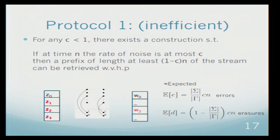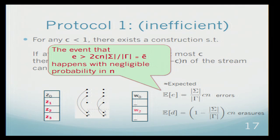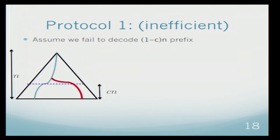We can compute what is the expected amount of errors and what is the expected amount of erasures. Note that once we know the expectation, then the event that the real number of errors is more than twice the expected amount happens with negligible probability. So let's just denote twice the expectation with E bar and we will use it soon.